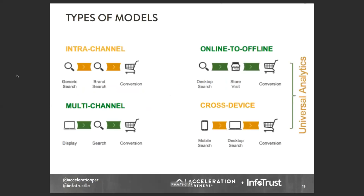Now we're going to talk about attribution modeling. There are really four problems marketers have when it comes to attribution. First, we have intra-channel and multi-channel types of attribution — for example, a customer using generic search, then brand search, then completing a conversion; or a multi-channel combination of display, social, and affiliate working together. On the other hand, we have a different problem requiring integration between platforms, because we have to deal with offline integration — marketing takes place online but the conversion happens offline.